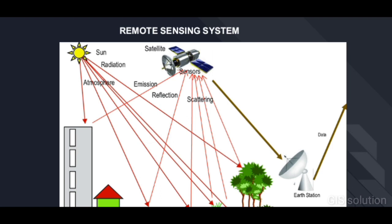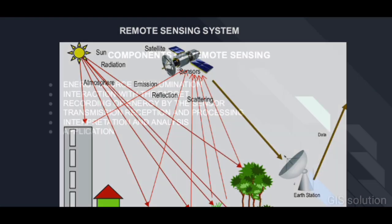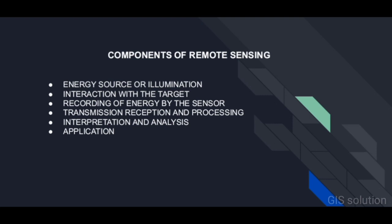The data is then sent to the earth station where data processing and analysis happens, and information is collected about the object or place. Now we will discuss the components needed for remote sensing. First, energy source or illumination — the first requirement for remote sensing is to have an energy source which illuminates or provides electromagnetic energy to the target of interest.